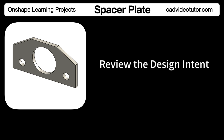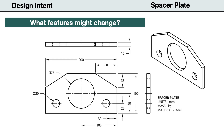Before we model the part in Onshape, we have to establish our design intent. For this project, we intend our model to be flexible to possible design changes and update predictively without errors. To start, we need to identify all the features that may need to be changed or revised during or after modeling the part.